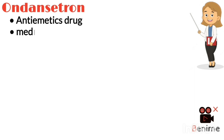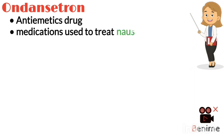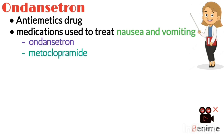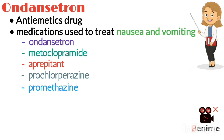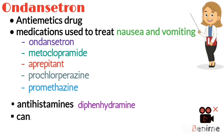Antiemetics are a group of medications that are used to treat nausea and vomiting. These include ondansetron, metoclopramide, prochlorperazine and promethazine, as well as antihistamines like diphenhydramine and cannabinoids such as dronabinol.